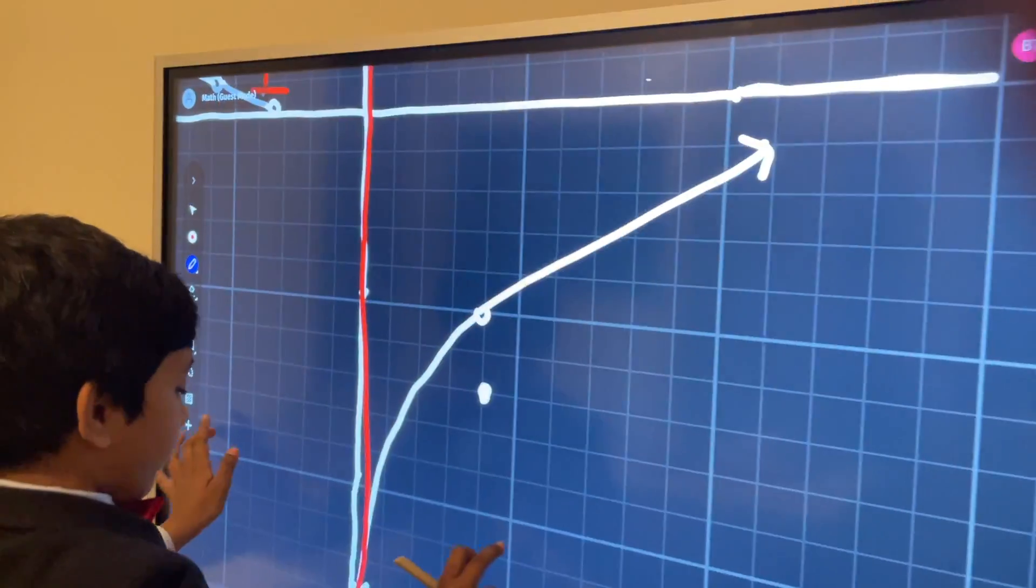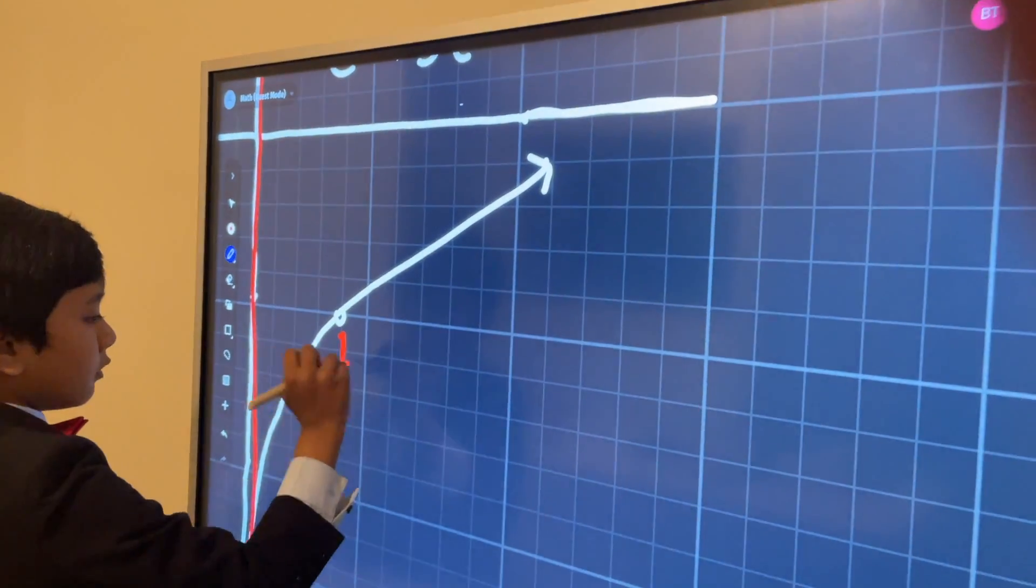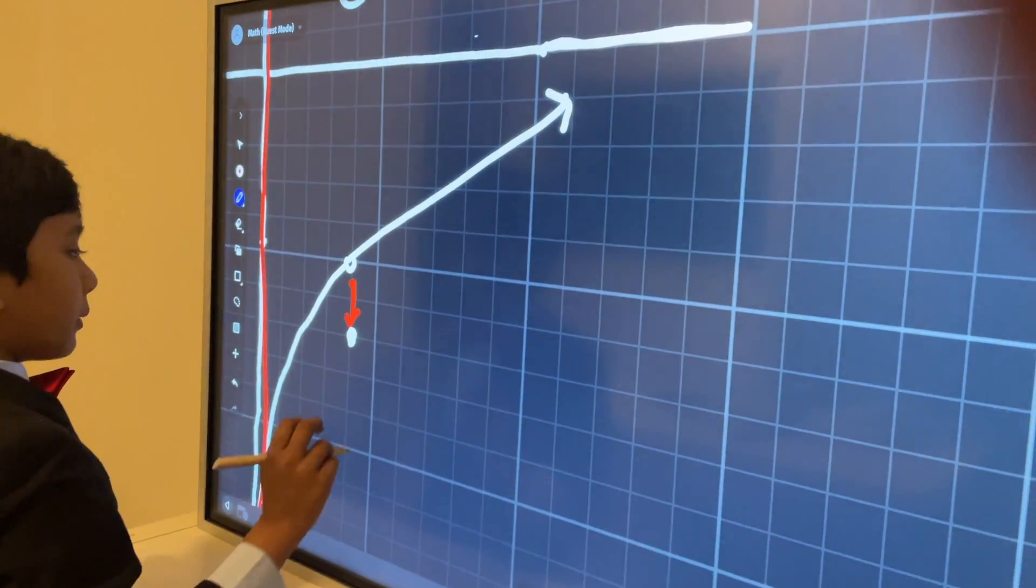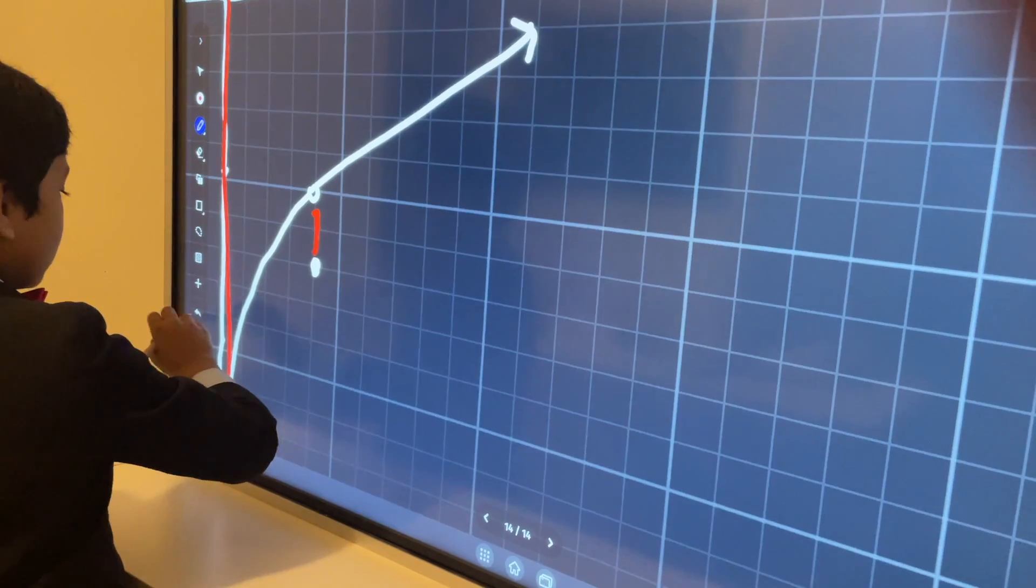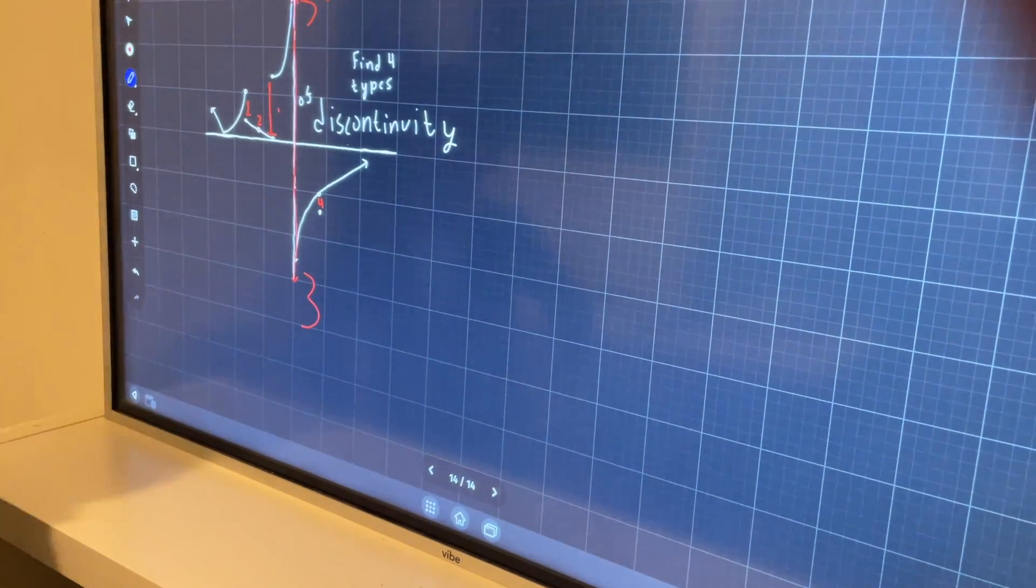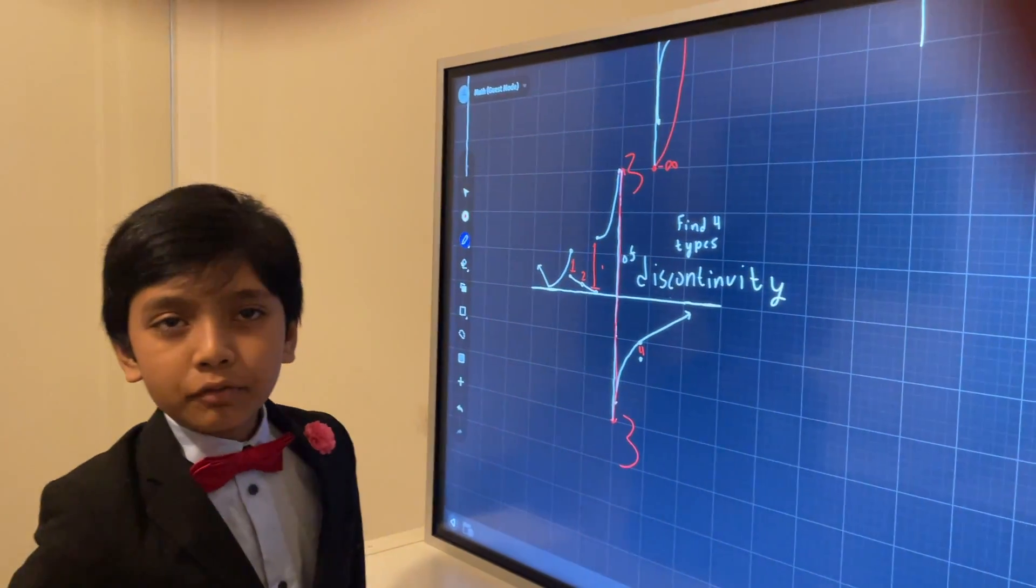And then we'll have number four. Where? Well, over here. You can see it jumps up to some y value before going back down. So this is our final thing, number four. So those are the four types of discontinuity in the graph. We will see you at home.